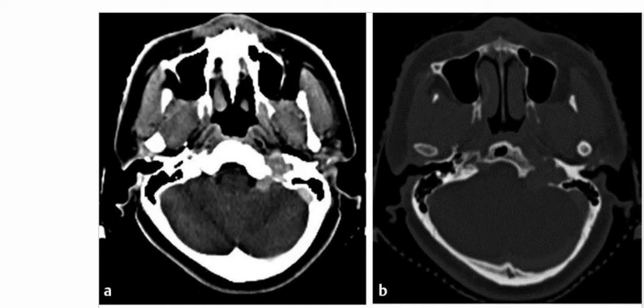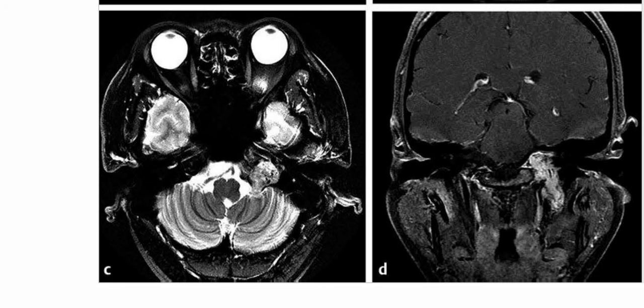This is a 46-year-old woman presenting with dysphagia and tinnitus. The contrast-enhanced axial CT images in soft tissue and bone windows show an enhancing soft tissue mass with expansion and irregular erosion of the jugular foramen. The corresponding T2-weighted MRI shows multiple flow voids within an intermediate to hyperintense left jugular foramen mass. The coronal T1 post-contrast MRI with fat suppression shows the avidly enhancing mass centered within the jugular foramen, extending intracranially into the internal auditory canal and inferiorly into the upper cervical region.